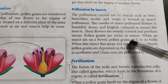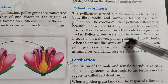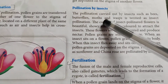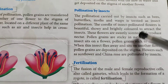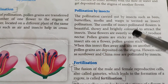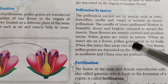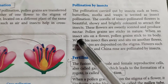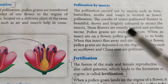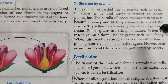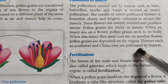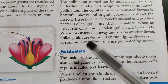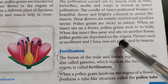Insects are also agents of pollination. Insects such as bees, butterflies, moths, etc., when they fly on top of these flowers, the pollen grains — which are sticky in nature — stick to different body parts of these insects. When the insects sit on another flower, these pollen grains fall on the stigma of the flowers. Flowers such as china rose and sunflower are pollinated by insects.